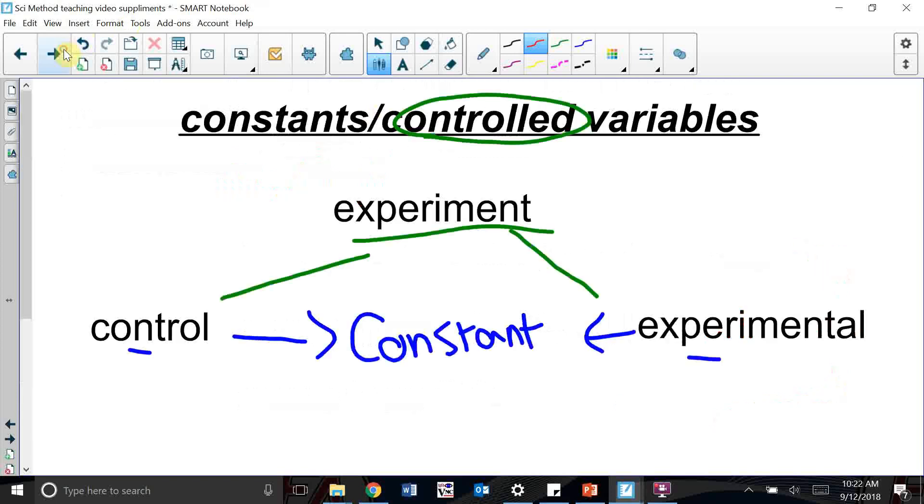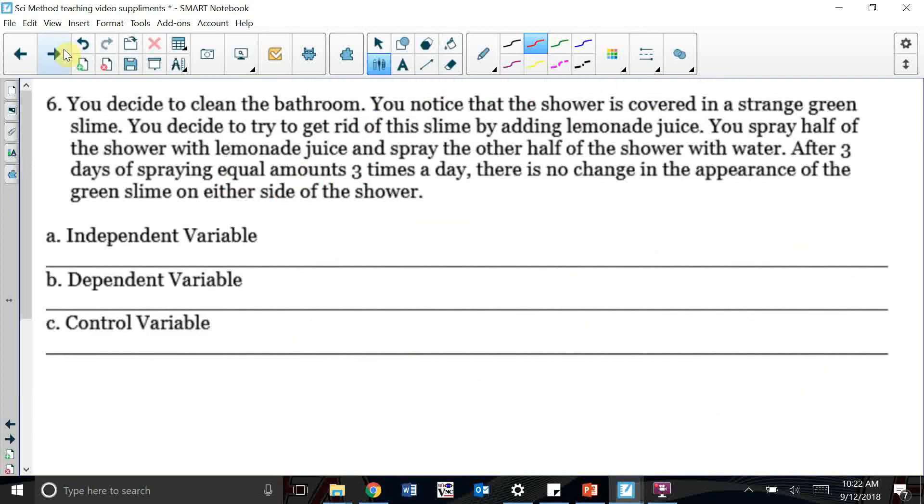Let's go ahead and just do one more example. Again, here's another example from past homework or in our notes. You decide to clean the bathroom. You notice that the shower is covered in a strange green slime. You decide to try to get rid of this slime by adding lemonade juice. You spray half of the shower with lemonade juice and spray the other half of the shower with water. After three days of spraying equal amounts three times a day, there is no change in the appearance of the slime on either side of the shower.